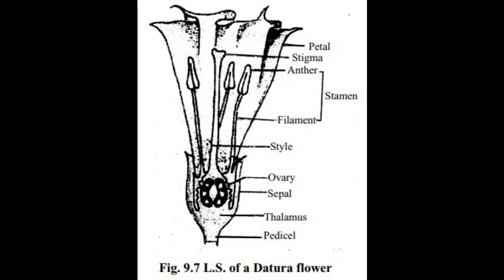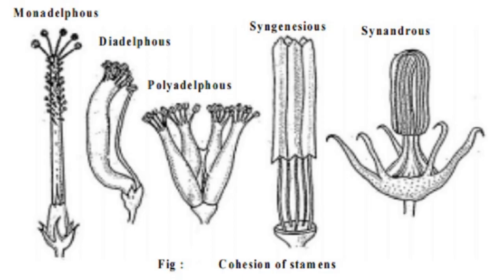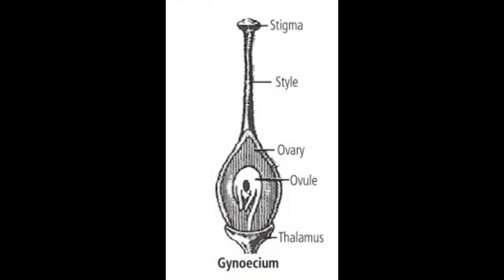These stamens are generally present five in number in flowers. The stamens of the flower together are called the male part or androecium. In different plants, different types of stamens are present.